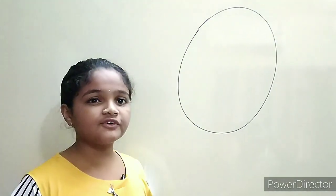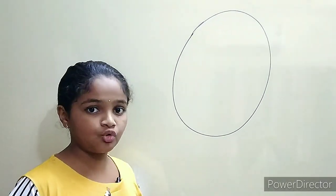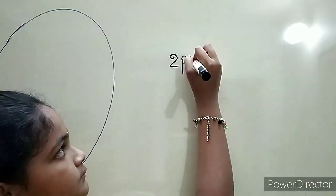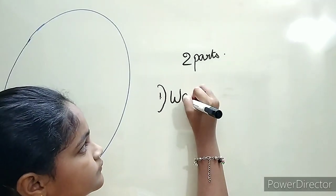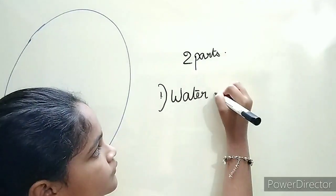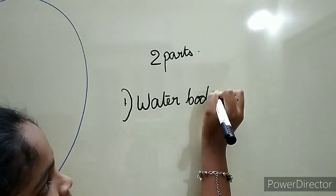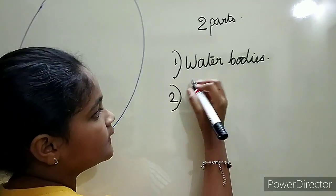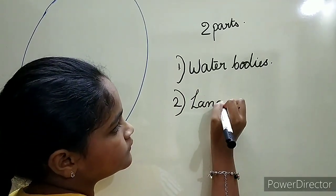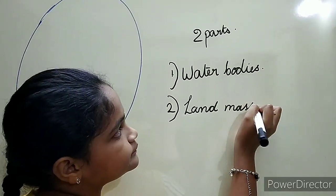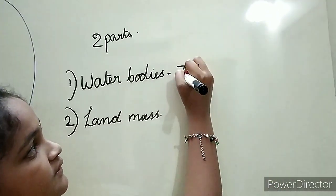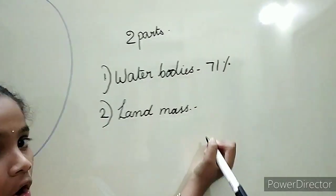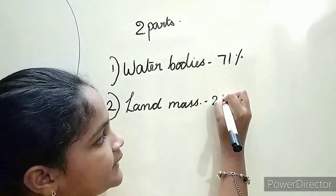Our earth is in spherical or giant shape. The surface of the earth is divided into two parts: the first part is water bodies, and the second part is landmass. Water bodies occupy approximately 71% and landmass occupies approximately 29%.